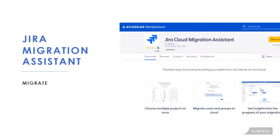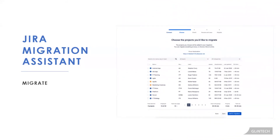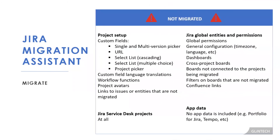Jira also has a Cloud Migration Assistant — Glintech helped test this through the Early Access Program with some of our clients. You connect your server instance to cloud, choose what to migrate including users and projects. However, because Jira is more complex, the migration assistant does not migrate everything. Certain custom fields, select lists, workflow functions, and links to issues or entities that are not migrated will not come across.